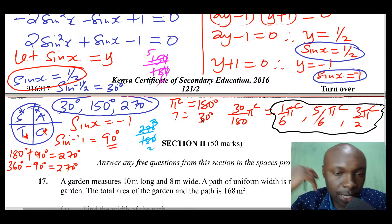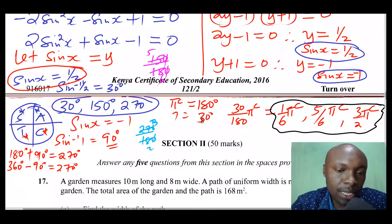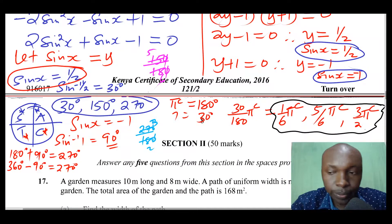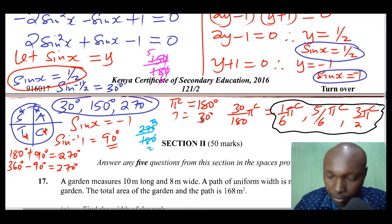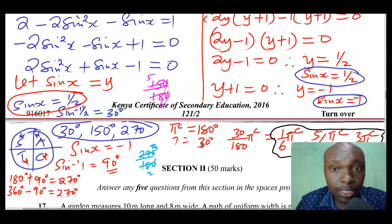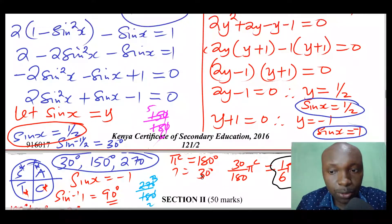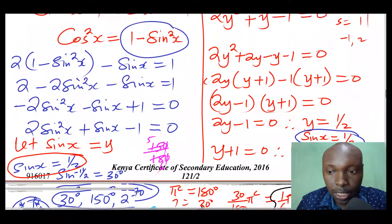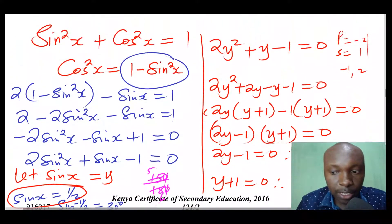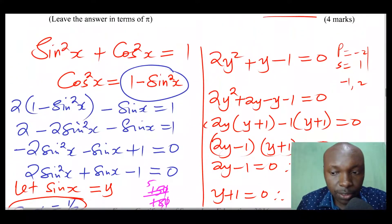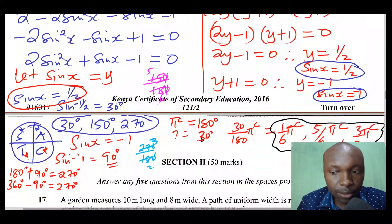We worked the answers first in degrees and then converted them to pi radians. That is basically how you solve that kind of question. Thank you so much.